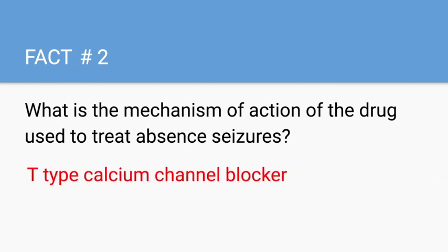What is the mechanism of action of the drug used to treat absence seizures? T-type calcium channel blocker — this is the mechanism of action of ethosuximide. Patients who experience absence seizures usually do not have a postictal state; however, you might see them smacking their lips or fluttering their eyes during the absence seizure.